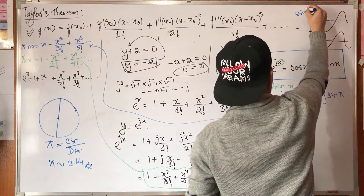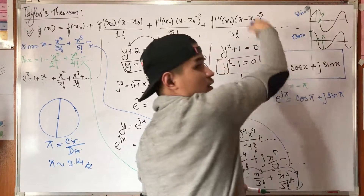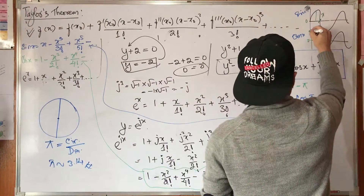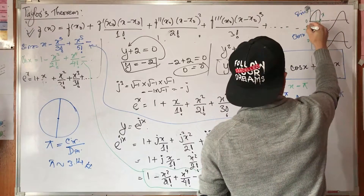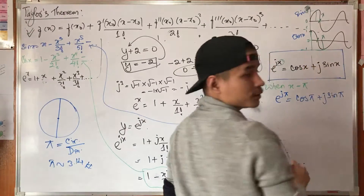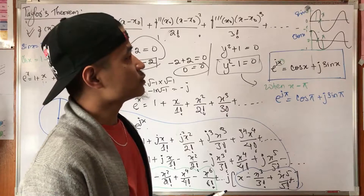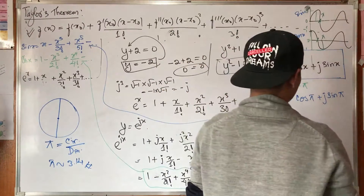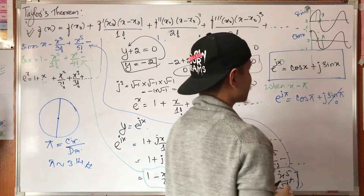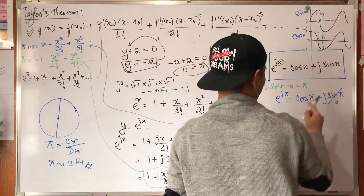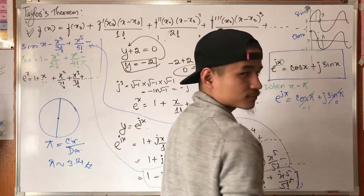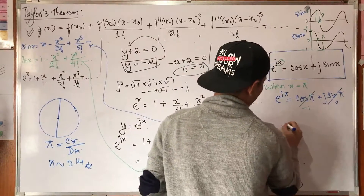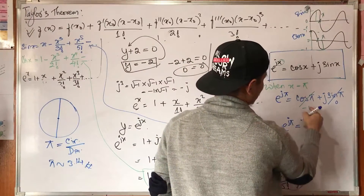Here, sine of pi is zero, and cosine of pi is minus one. So e to the power j pi equals minus one plus j times zero, which equals minus one.